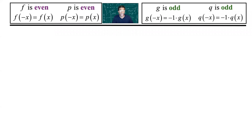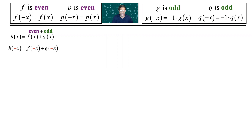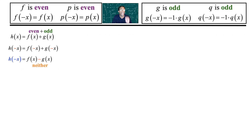Let's look at adding two such functions — an even and an odd function added together. To check whether it's even, odd, or possibly neither, we replace negative x for x. In the f function it goes back to the original, but in the g function a negative 1 comes out. So the addition flips into subtraction of these functions. Compared to the original, it's not exactly the same and it's not negative 1 times, so what you're getting out is neither. When you add an even function to an odd function, what comes out is neither even nor odd.